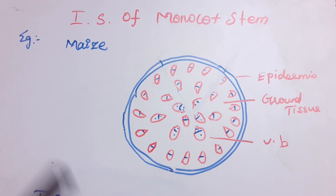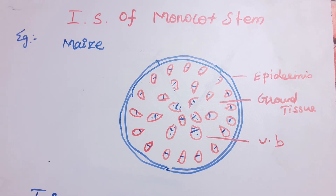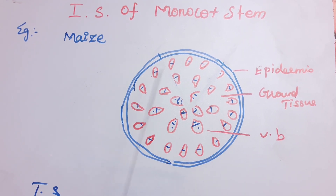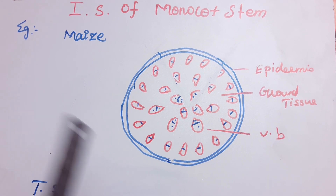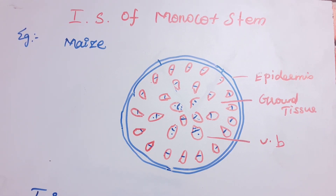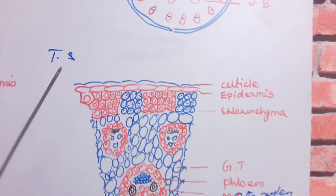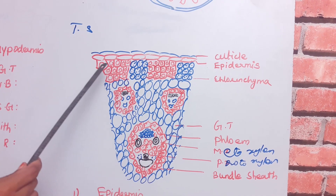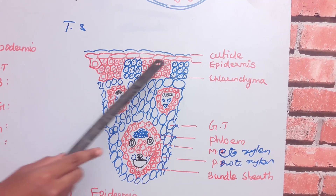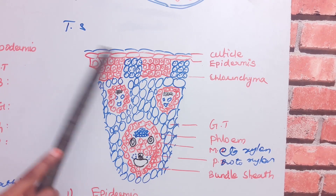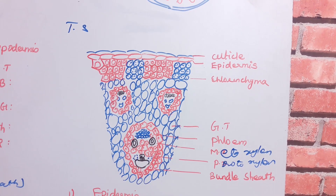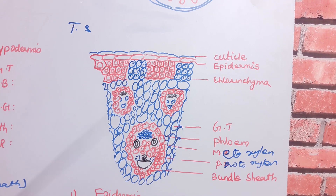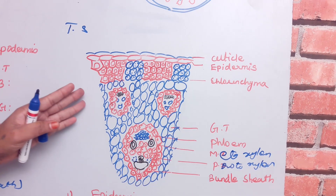In the monocot stem, the outermost layer is the epidermis. It is a single layer of barrel-shaped cells with a protective function. The cuticle is present, but the epidermal hair is absent. There is no cortex, endodermis, or pericycle differentiated — these are all replaced by ground tissue.